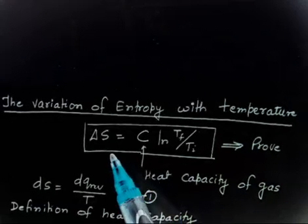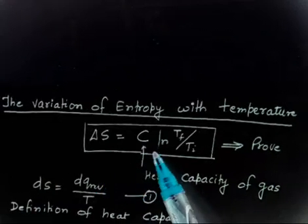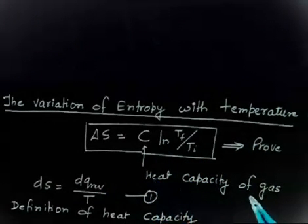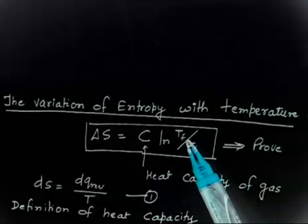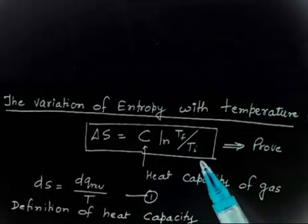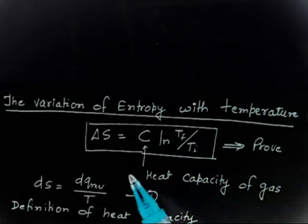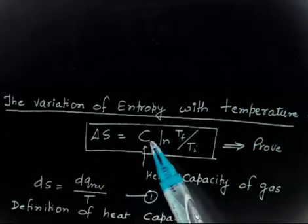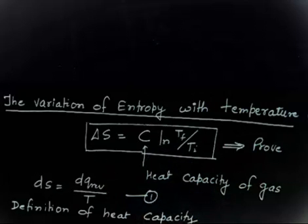This time the entropy change is given as ΔS = C ln(Tf/Ti), where C is the heat capacity of the gas, Tf is the final temperature of the system, and Ti is the initial temperature of the system. We have to derive this expression for ΔS = C ln(Tf/Ti).